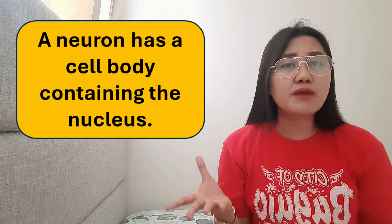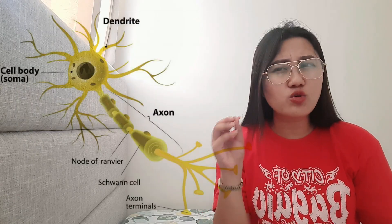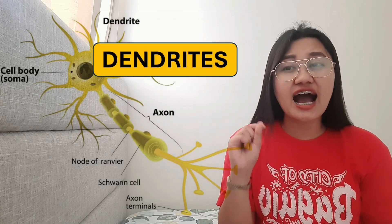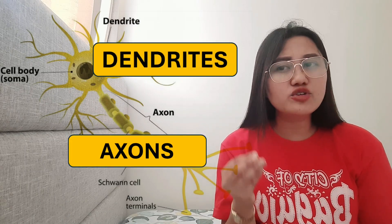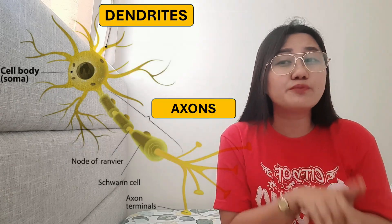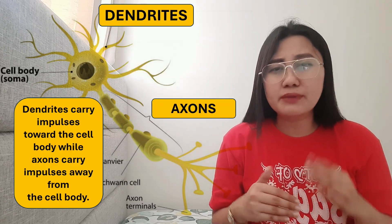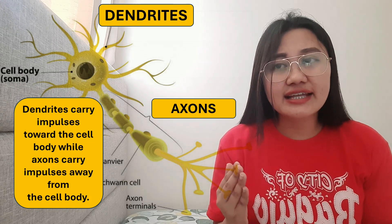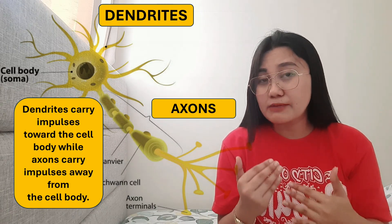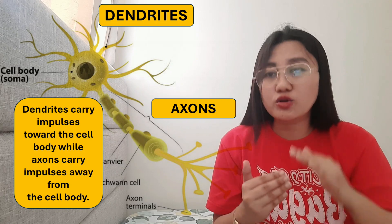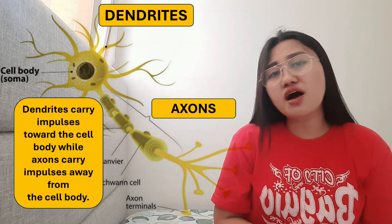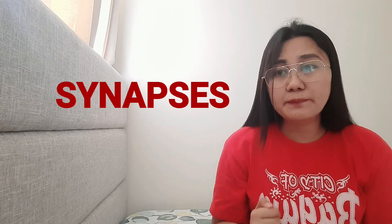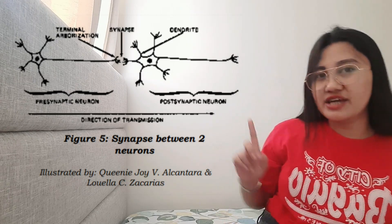The neuron has a cell body containing the nucleus. In the cell body there are root-like structures called dendrites and axons. Dendrites carry impulses towards the cell body, while axons carry impulses away from the cell body. We also have the term synapses, which are the gaps between neurons. In the figure you can see the synapse between two neurons.